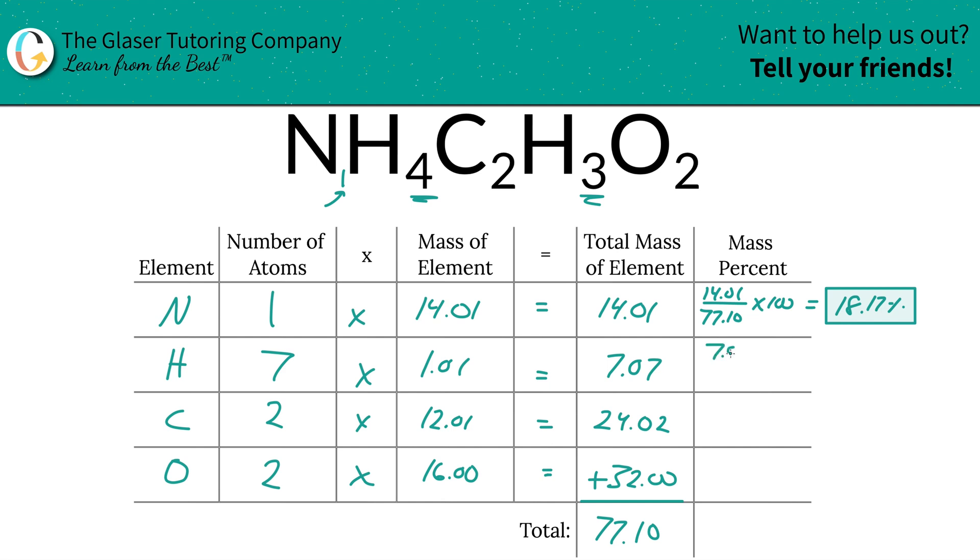Next we're going to do hydrogen, so we're going to take the total mass of that hydrogen, 7.07, then divide it by the total mass of the entire compound, 77.10, multiply that by 100, and we're going to come up with a percent of about 9.17.